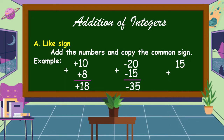Another example: 15 plus 8. Notice that 15 and 8 have no sign. If there is no sign, it is understood as positive. We can write the positive sign or not for counting numbers. So, 15 plus 8 is equal to 23, and 23 here is considered positive.